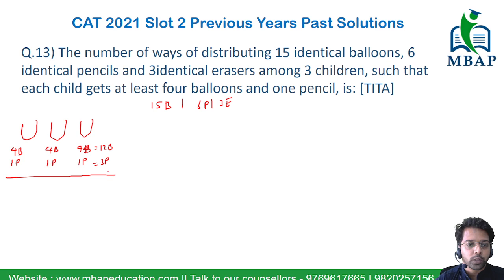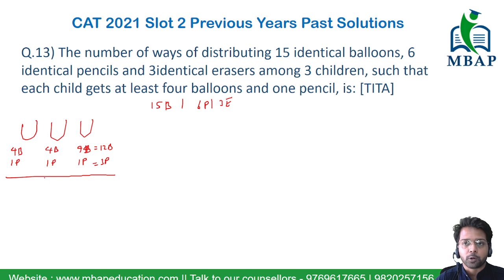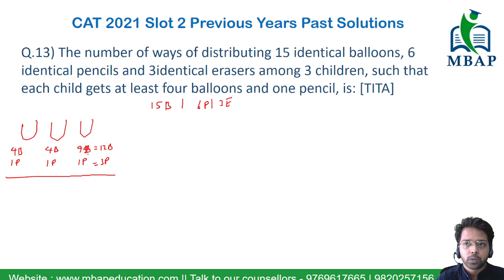So what is the remaining count left to distribute freely? Out of 15 identical balloons, 6 identical pencils, and 3 identical erasers: 15 minus 12 gives 3 balloons remaining. So I am left with 3 balloons, 3 pencils, and 3 erasers.